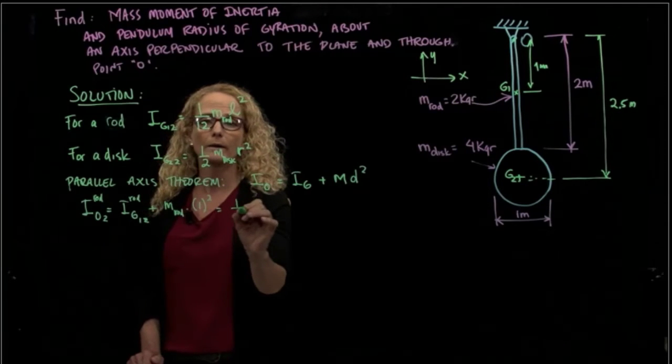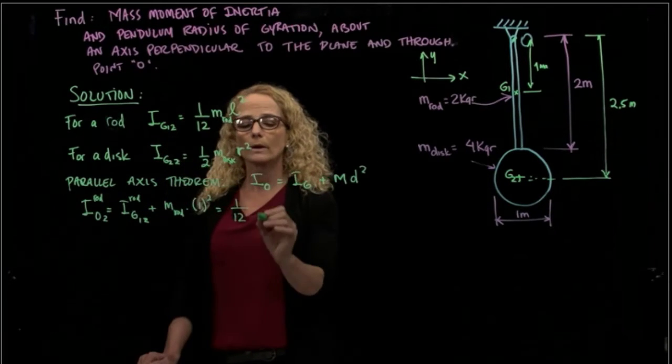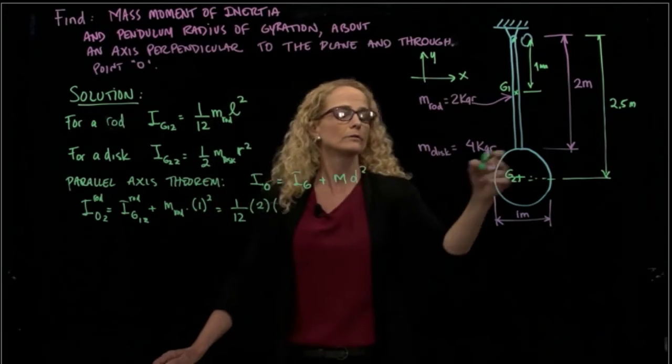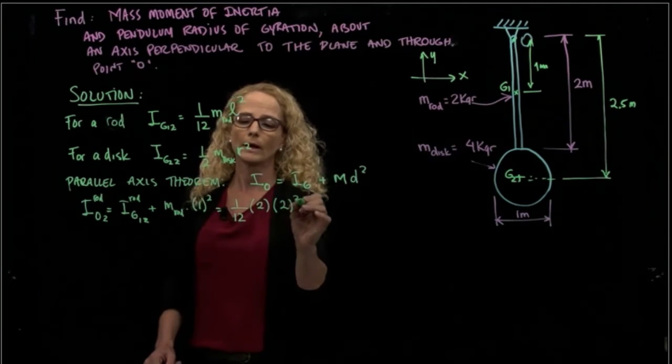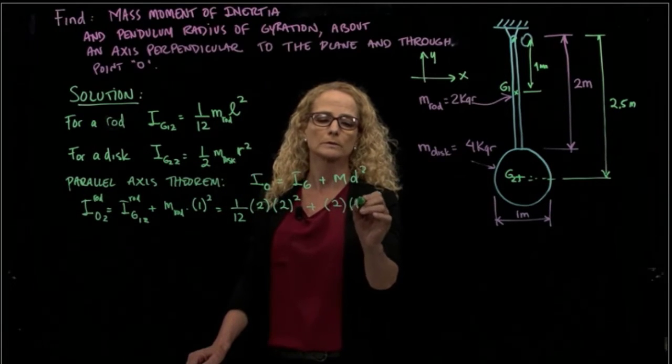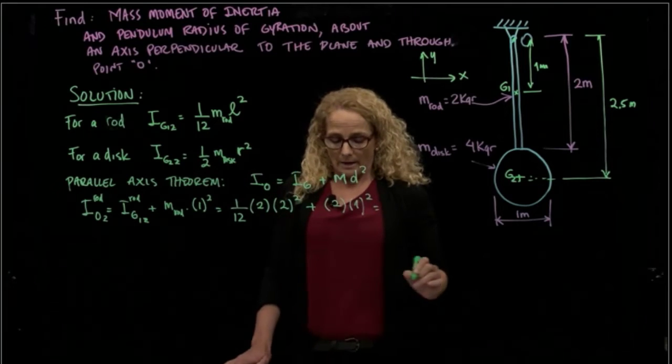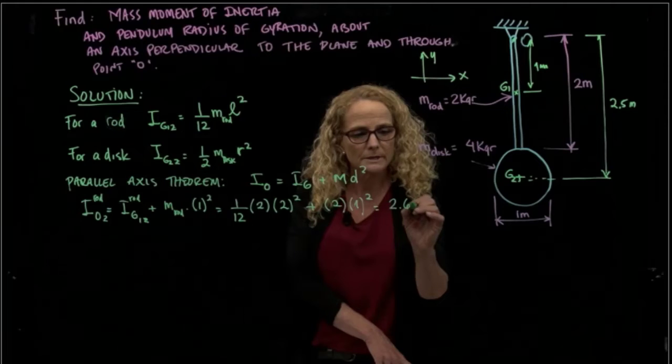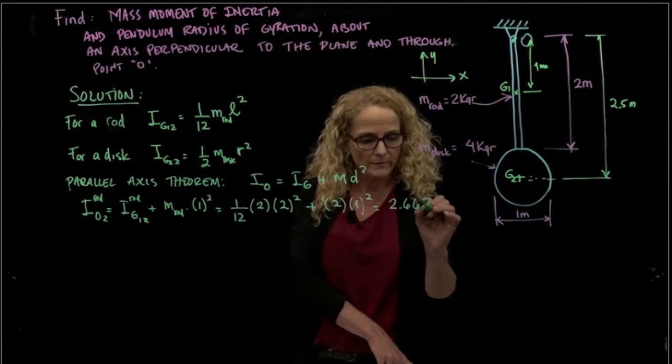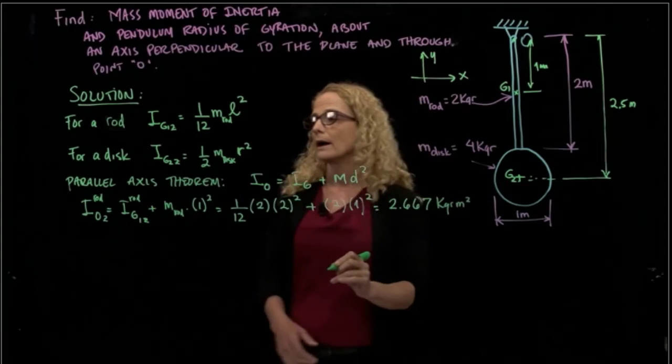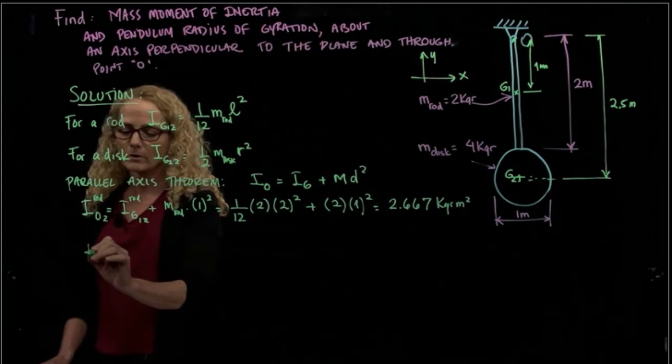So that will be then 1/12, the mass is 2, 2 kilograms, the length is 2 meters, squared, plus the mass, again, which is 2 times 1 squared. And that gives me a value of, I have it right here, 2.667 kilograms meters squared.